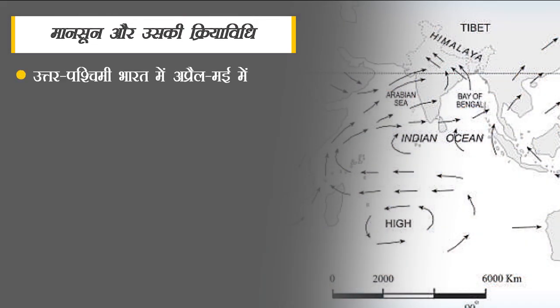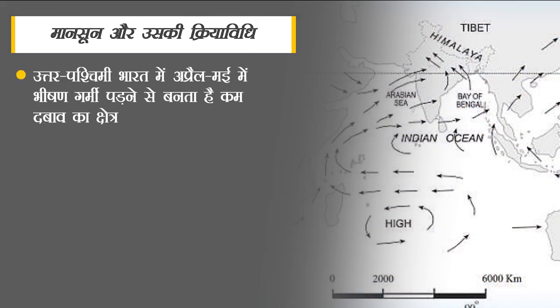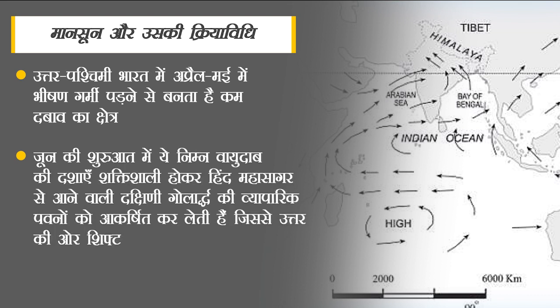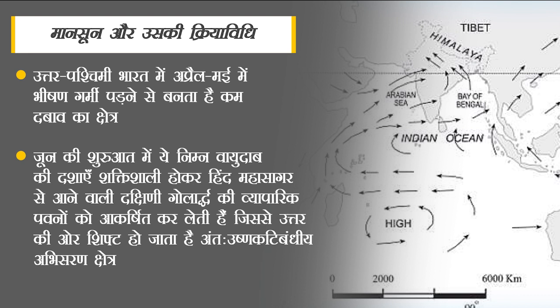सबसे पहले मानसून और उसकी क्रियाविधि के बारे में जानते हैं। मानसून मूल रूप से हिंद महासागर और अरब सागर की ओर से भारत के दक्षिण-पश्चिम तट पर आने वाली उन पवनों को कहा जाता है जो भारत, पाकिस्तान, बांग्लादेश आदि देशों में भारी बारिश कराती हैं। ये मौसमी पवनें दक्षिणी एशिया क्षेत्र में जून से सितंबर तक सक्रिय रहती हैं। इस अवधि को वर्षा ऋतुकाल यानी बारिश का मौसम कहा जाता है।